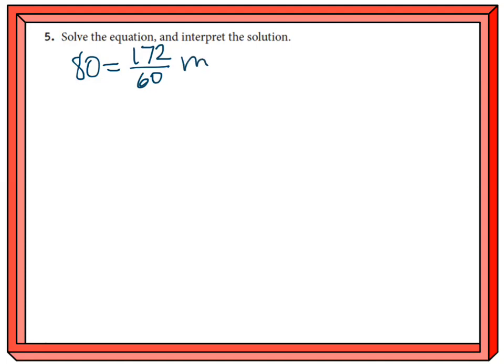So this is a fraction that is being multiplied times m. If I wanted to get rid of multiplication I'd divide, but whenever you're dividing fractions you multiply by the reciprocal. So I'm just going to multiply both sides of this by the reciprocal, which is 60 over 172.